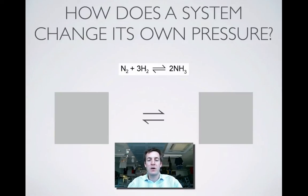So let's start off by looking at how in general a system will change its own pressure. If I increase the pressure, as we know, Le Chatelier's principle says that the system will try and lower it. Well, how can that happen?